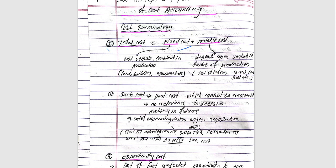Total cost is fixed cost plus variable cost. Fixed cost remains constant — examples include land, building, equipment, and fixed labor cost. Variable cost examples include raw materials and fuel.